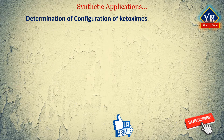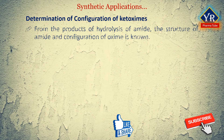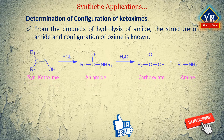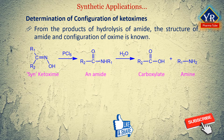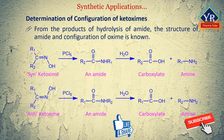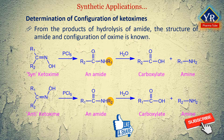Determination of configuration of ketoximess. From the products of hydrolysis of the amide, the structure of the amide is known and, for that matter, the configuration of the oxime is known. For instance, the two isomers — namely syn- and anti-isomers of ketoximess — invariably give rise to the formation of altogether different amides upon hydrolysis, as given here.